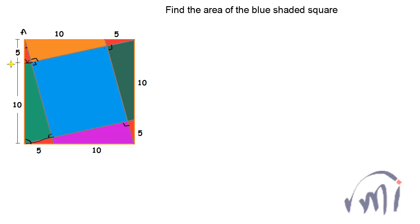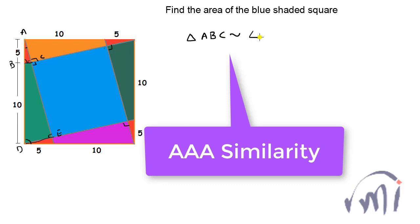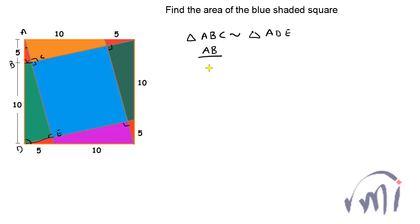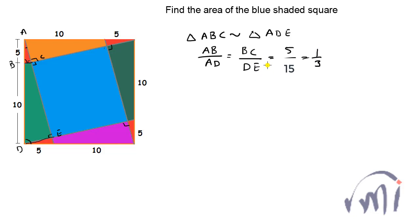Let me name this tiny triangle as ABC, and if I call this point as D and this point as E, triangle ABC is similar to triangle ADE, where the ratio of AB to AD is equal to the ratio of BC (the base of the tiny triangle) to DE (the base of the bigger triangle ADE). AB over AD is 5 over 15, that is 1 to 3, which means the ratio of BC and DE is also 1 to 3.